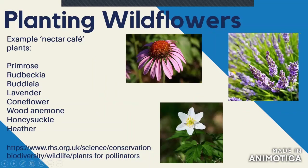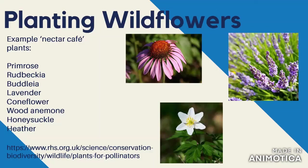Another thing we can do is plant up wildflowers to create a nectar cafe. If we've got plenty of pollinator plants in our back garden and outdoor spaces, we'll encourage more insects to come, and these insects can form the basis of a food chain to attract birds and small mammals. There's a link at the bottom of the slide with a detailed list of plants specific to your amount of sunlight, climate, location, and how much time you have to devote to the nectar cafe.